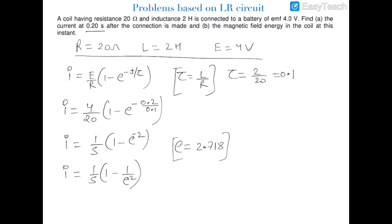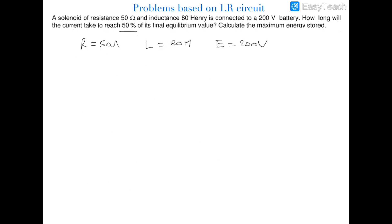We also have to calculate the maximum energy stored. Energy stored can be calculated by the formula ½LI². We have already calculated current and been given inductance, so we can easily calculate this. In this case i = i₀(1 − e^(−t/τ)). Again this is a charging LR circuit because a cell is connected in the circuit.